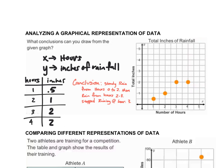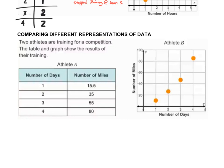You need to be able to look at a graph and answer questions about what's going on. For the last question, we're comparing different sets of data: a table for athlete A and a table for athlete B. In both, you have the number of days the athletes are training and the number of miles.